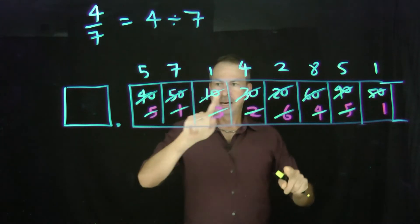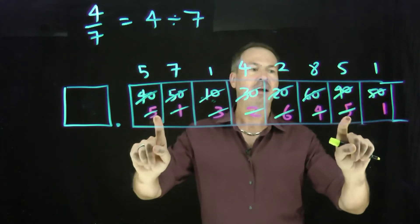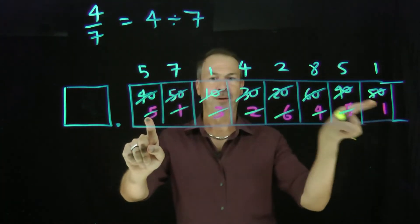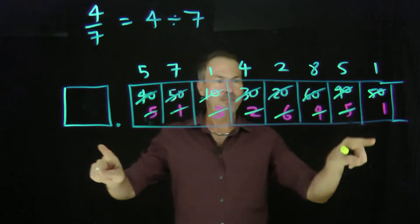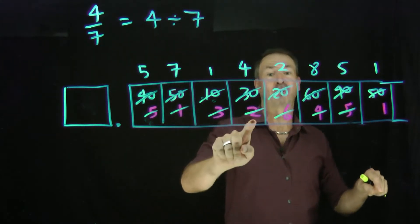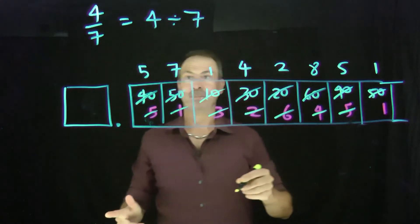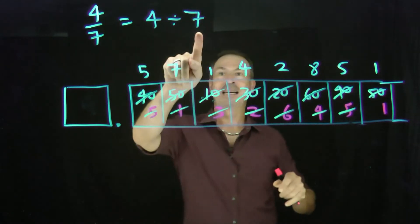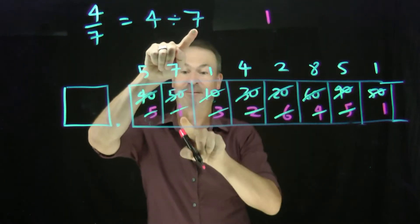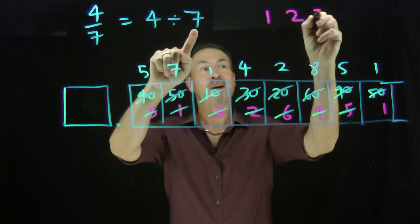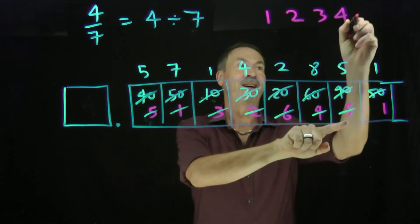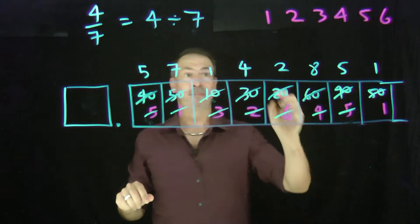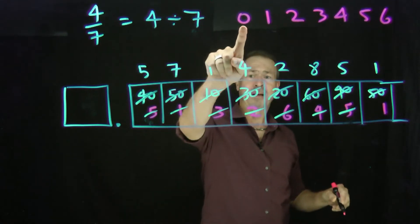I started repeating when I fell into the same remainder of five — 40 gave me the same remainder of five, and that's when I started repeating work. Let's look at these remainders: I got a remainder of five, one, three, two, six, four, then five again. When I'm dividing by seven, what are the possible remainders I could get? I could get a remainder of one — in fact I did. A remainder of two — in fact I did. A remainder of three, four, five, and six — I got all of those. I could get a remainder of zero. That didn't happen here.